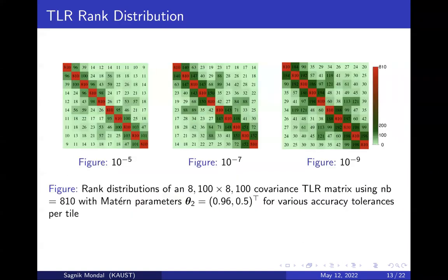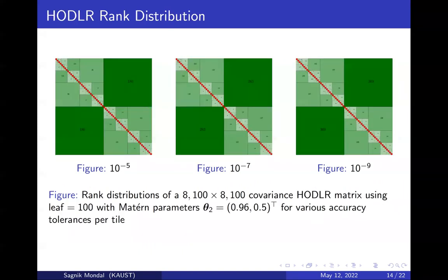We present the rank distribution of an 8100×8100 correlation matrix from the Matérn correlation function under TLR approximation with tile size 810. As the tolerance limit decreases, the rank of the off-diagonal tiles increases. We also present the HODLR rank distribution for different tolerance limits with the smallest sub-block size no less than 100. The results suggest that TLR puts less emphasis on further off-diagonal blocks, whereas HODLR puts less emphasis on nearer off-diagonal blocks.